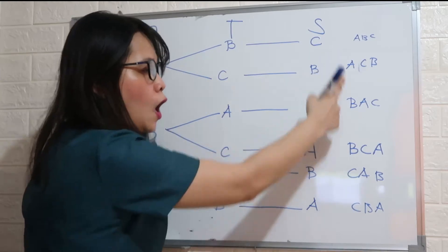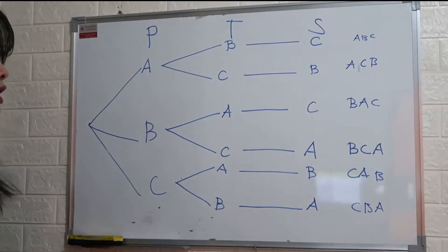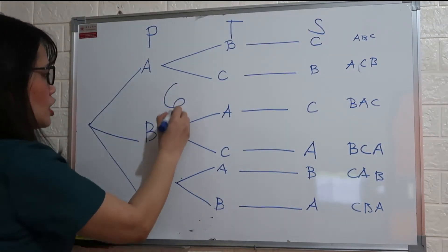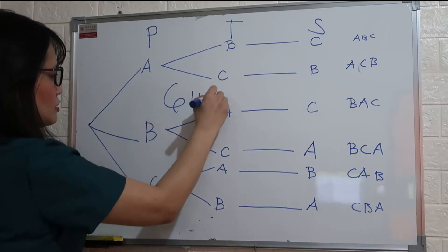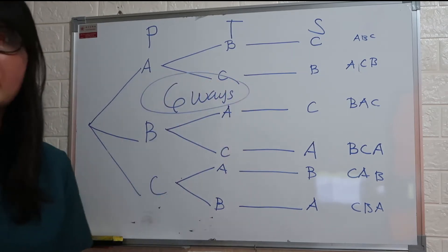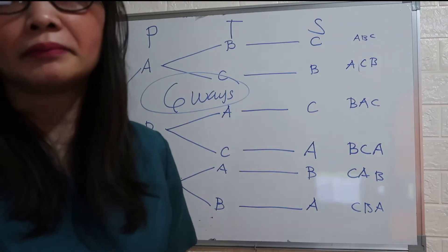So how many possible outcomes do we have? Six. There are six ways. That is the tree diagram.